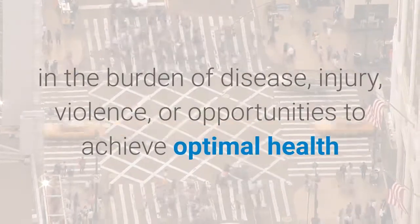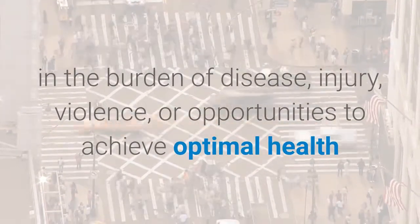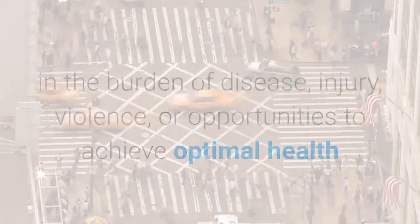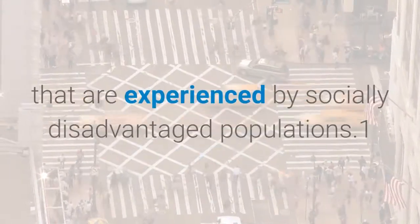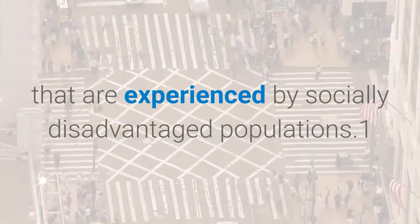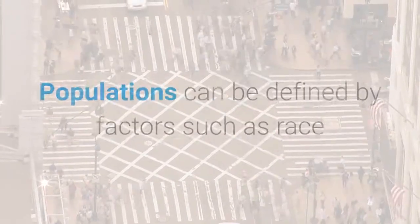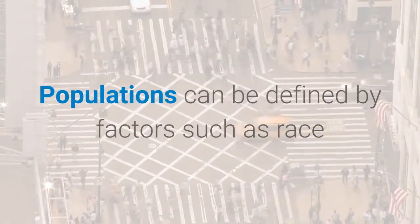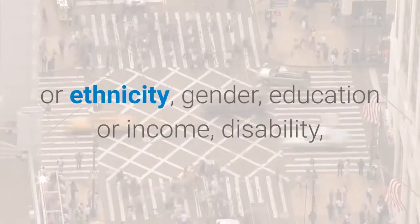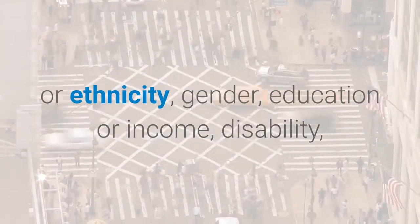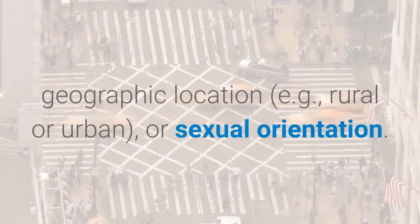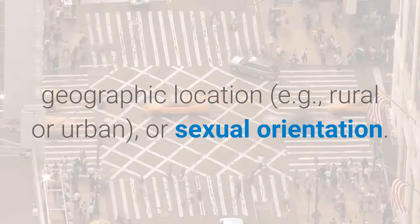Health disparities are preventable differences in the burden of disease, injury, violence, or opportunities to achieve optimal health that are experienced by socially disadvantaged populations. Populations can be defined by factors such as race or ethnicity, gender, education, or income.